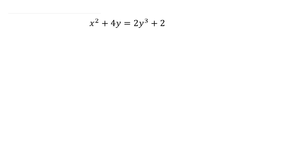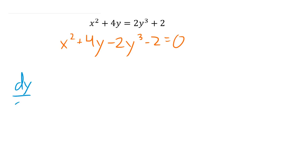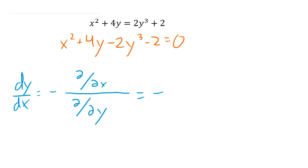The next one is easier to wrap our heads around. If I did this one, first I'd move everything to one side: x² + 4y. It doesn't matter if I move it to the left or right — either way it'll come out the same. dy/dx equals negative — and the negative is the easiest part to mess up, people forget it — partial derivative with respect to x over partial derivative with respect to y. With respect to x: x² becomes 2x; 4y is a constant so it goes away; negative 2y³ is a constant, goes away; minus 2 is a constant, goes away. With respect to y: x² is a constant so it goes away; 4y becomes 4; minus 6y² stays; minus 2 is a constant, goes away. There's dy/dx! How quickly did I do that?